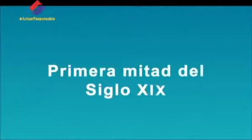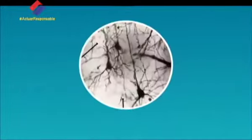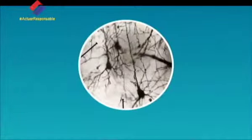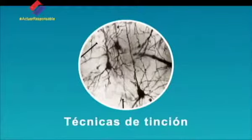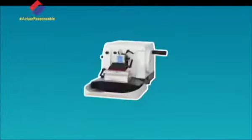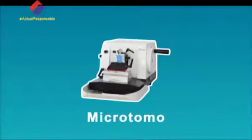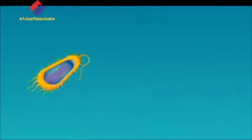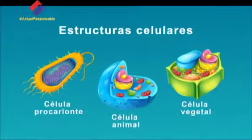Tiempo después, durante la primera mitad del siglo XIX, los avances tecnológicos en los microscopios, el uso de técnicas de tinción que aumentó el contraste de las preparaciones de tejidos, y la invención de aparatos denominados microtomos, que permitieron cortar láminas muy finas de tejidos, condujeron a descubrir las estructuras celulares y sus funciones y, con ello, formular la teoría celular.